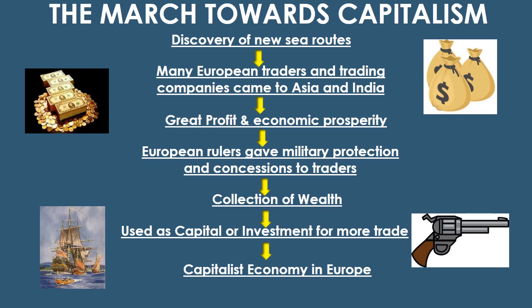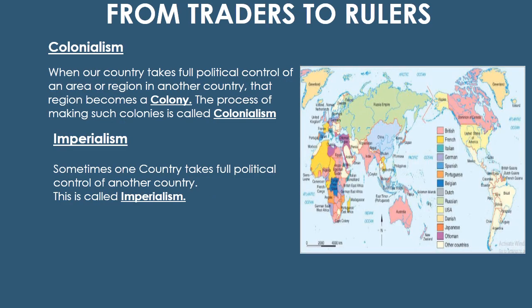What is a capitalist economic system? It is a system where property or wealth began to be used in the form of capital for the development of trade and trade-related activities.